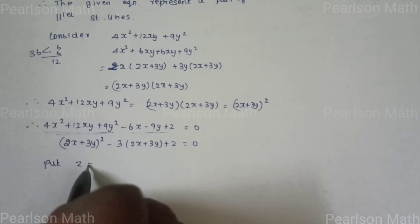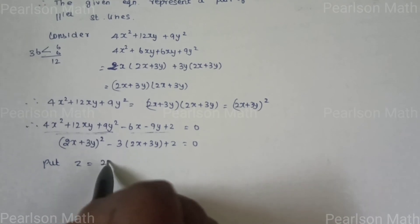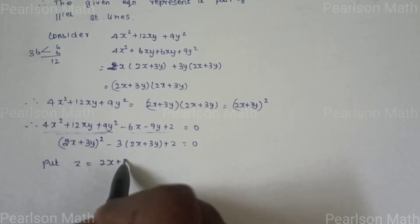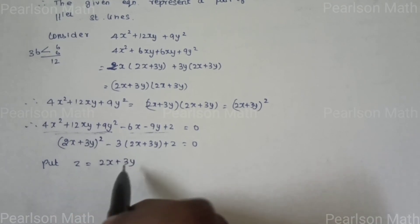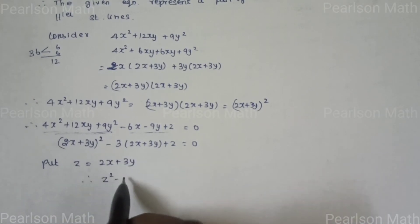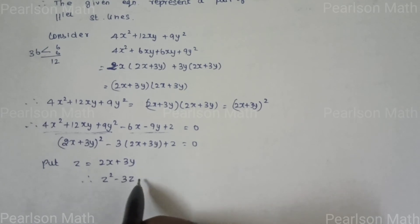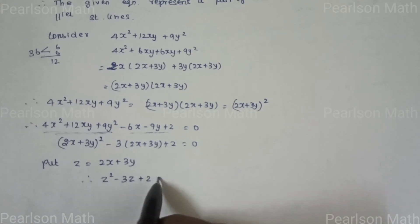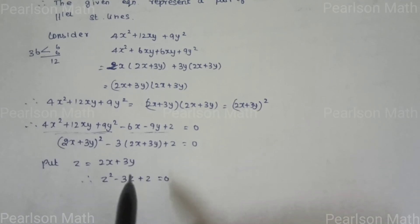Let z = 2x + 3y. Then we have a quadratic equation: z² - 3z + 2 = 0.